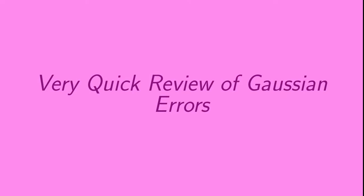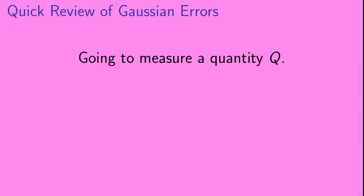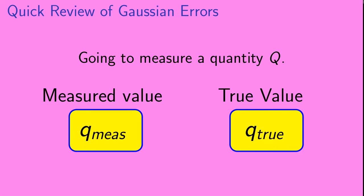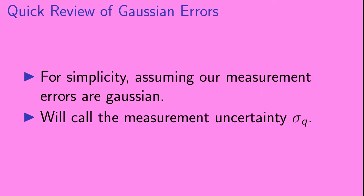Let's start with a very quick review of Gaussian errors. Let's say we're going to measure some physical quantity, which we'll call Q. Q might be, for example, the mass of a star or the population density of a certain species in a given area. When we make a measurement of this quantity Q, we'll get a result which we call Q_measured. Meanwhile, the true value of Q is something that we'll call Q_true — Q_true is something that we do not know. Due to measurement uncertainties, Q_measured will probably not equal Q_true. We're going to assume that our measurement errors are Gaussian, and we will call the measurement uncertainty sigma_Q.